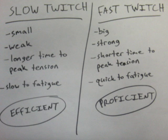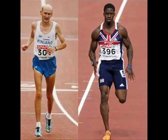On the fast twitch end of the spectrum, muscle fibers are bigger and stronger, they generate tension more quickly, but they have very little endurance. These fibers are good for high speed and high muscular force movements, things like sprinting, jumping, and weightlifting. So it's efficiency versus proficiency, and then you have a whole bunch of fibers in the middle that have a mix of the two.